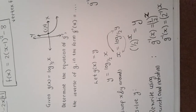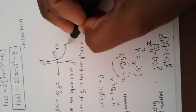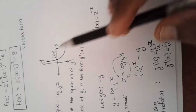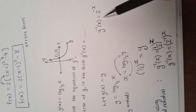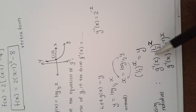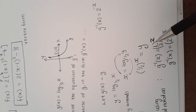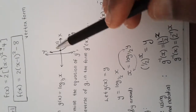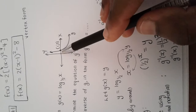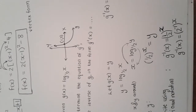If we sketch the inverse function g⁻¹ on the same set of axes, we have an exponential function whose base is between zero and one, which means it is a decreasing exponential. A decreasing exponential similarly sits or sleeps along the positive x-axis.